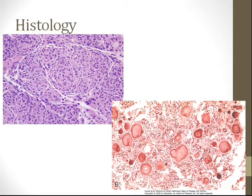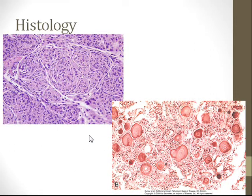In terms of histology, meningiomas possess two distinct characteristics. The first is a whorl pattern, which you can see right here, and the second is something called psammomatous calcifications, which appear as these onion ring-like structures.